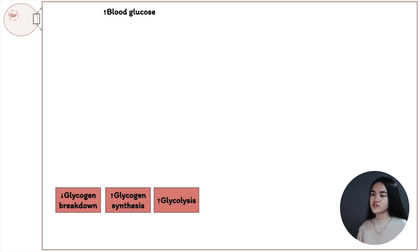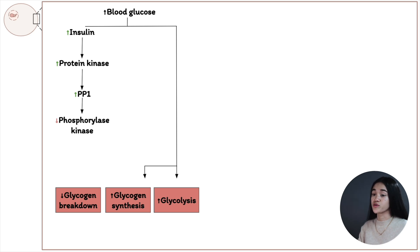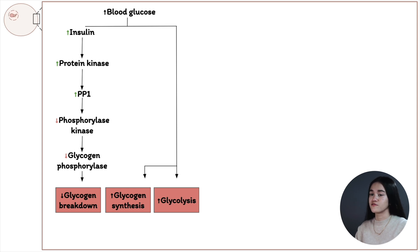In high blood glucose conditions — after a carbohydrate-rich meal — insulin is secreted signaling excess glucose. In the liver, glucose is transported through GLUT2 transporters and undergoes oxidation via glycolysis, increasing glycolysis activity. Liver cells also synthesize glycogen for storage. Insulin triggers insulin-sensitive protein kinase, activating PP1, which activates glycogen synthase and blocks phosphorylase kinase, converting glycogen phosphorylase to its inactive form and stopping glycogen breakdown. Insulin also blocks GSK3 activity, further increasing glycogen synthase activity.